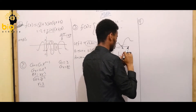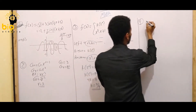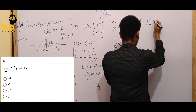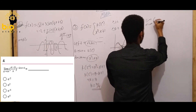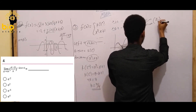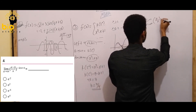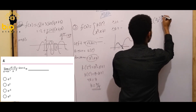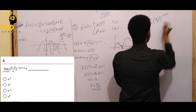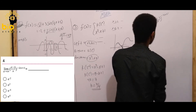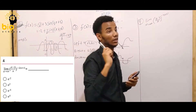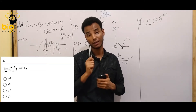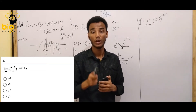The limit as x goes to infinity. We have x to infinity over x to infinity, minus 2x plus 1, minus 2x plus 1. This is the limit. The limit involves algebraic simplification.